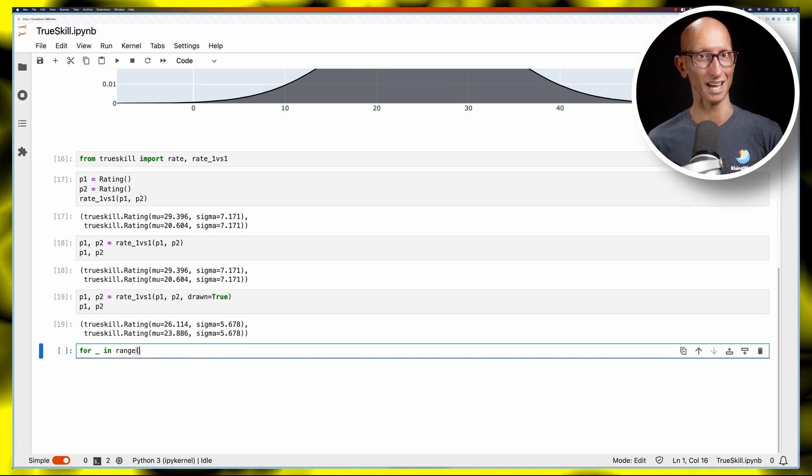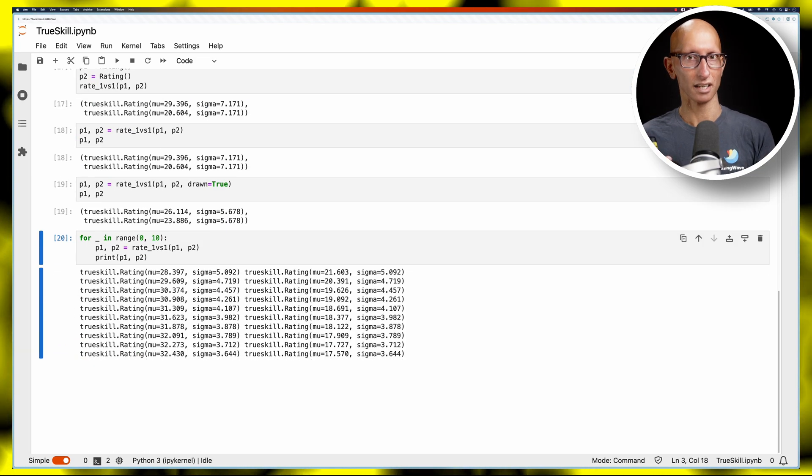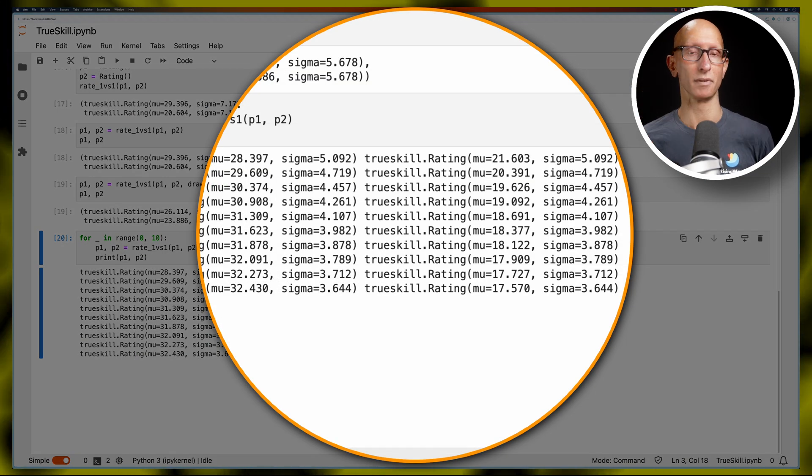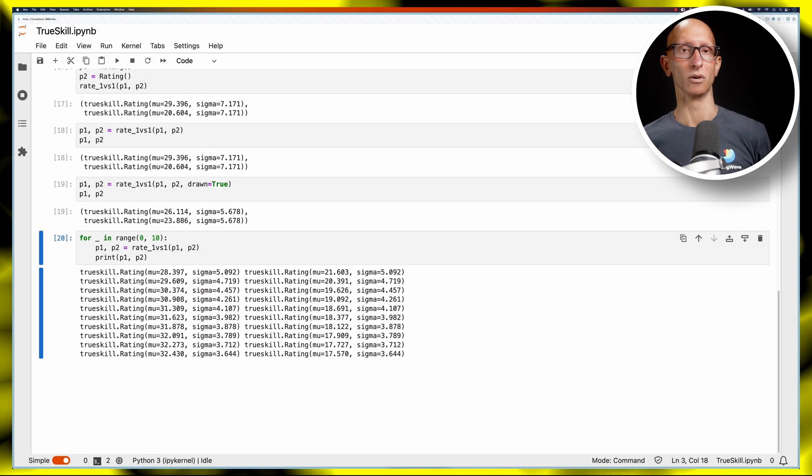Now let's run that match 10 times and we'll let p1 win each time. You'll notice their Sigma is going down for both of them on each iteration and the rating is going up for p1 and down for p2.